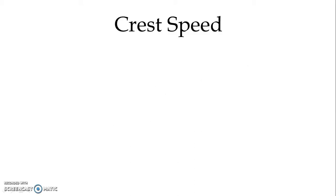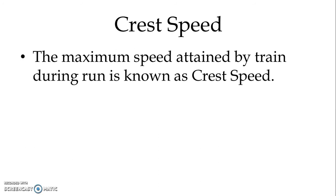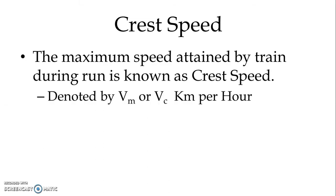Let us start with the crest speed. The maximum speed attained by a train during a run is known as the crest speed. It is normally denoted by V suffix M or V suffix C. We use V_M for the maximum speed or crest speed, and it is measured in kilometers per hour.